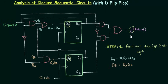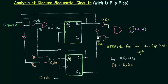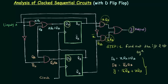Now we move to the output equation — the expression for Y. We find the output of this OR gate whose inputs come from two AND gates. The first AND gate has inputs QA and X, giving XQA. The second AND gate has inputs QB complement and X complement, giving X complement QB complement. So Y equals X complement QB complement OR XQA. Step 1 is now completed.